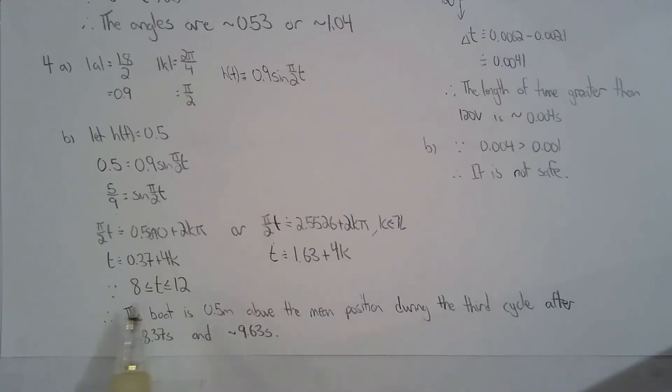So the third cycle means between 8 seconds and 12 seconds because the first cycle takes place from 0 to 4, the second cycle is 4 to 8, and then the third cycle is 8 to 12. So the solutions must be from 8 to 12 seconds. So I've got 8.37 and 9.63.